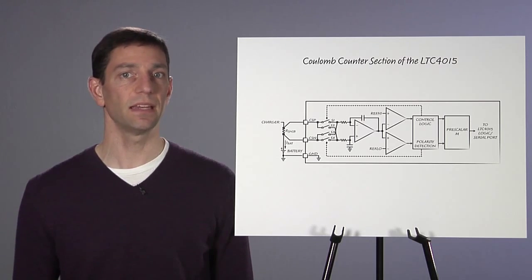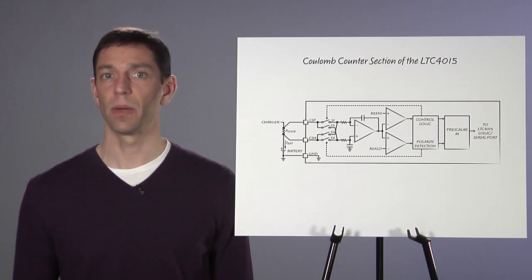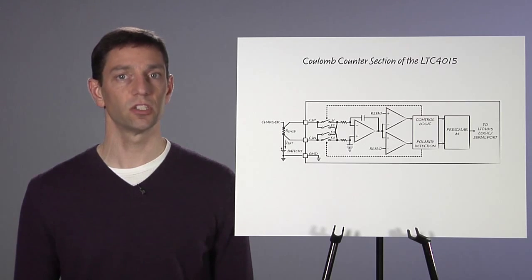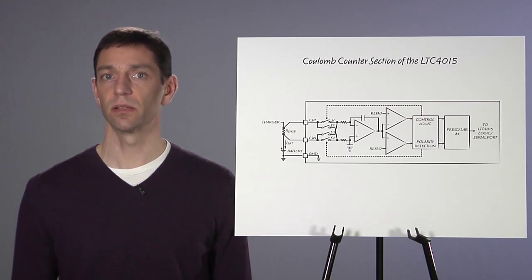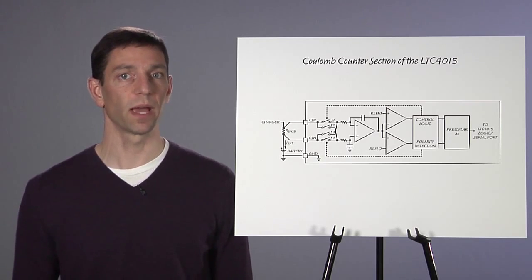While the Coulomb counter provides the battery state of charge information, the 14-bit ADC provides data from several other parameters including battery voltage, battery current both charge and discharge, battery series resistance, input voltage, input current, system voltage, die temperature, and thermistor voltage to monitor battery temperature.